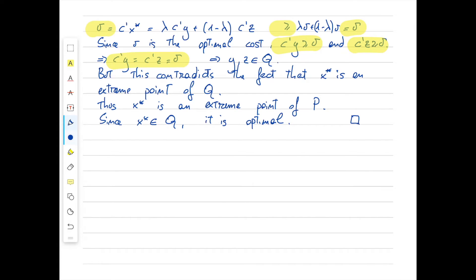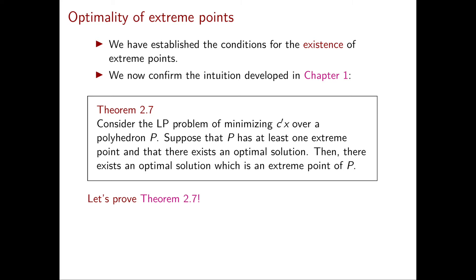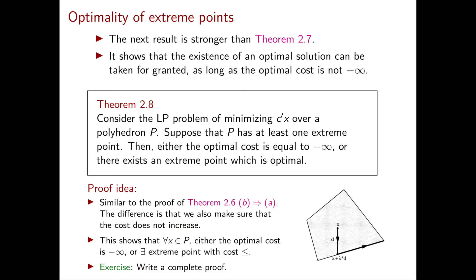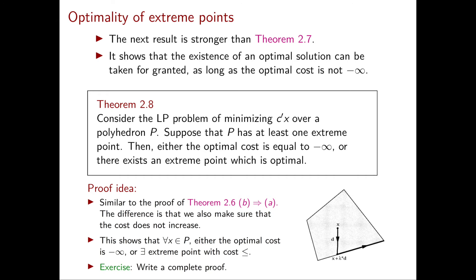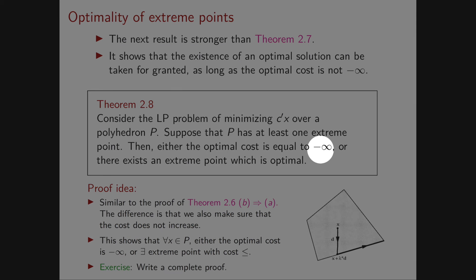Let's get back to the slides. Now that we have shown Theorem 2.7, I want to talk about a theorem that is actually stronger than 2.7. This new theorem, Theorem 2.8, gives a nice sufficient condition for the existence of an optimal solution, and the sufficient condition is that the optimal cost is not minus infinity. We consider the LP problem of minimizing C transpose X over a polyhedron P, and we assume that P has at least one extreme point. Then, only two things can happen: either the optimal cost is equal to minus infinity, or there exists an extreme point which is optimal.